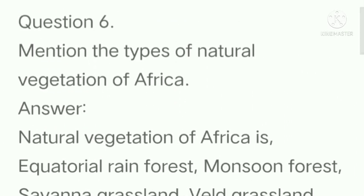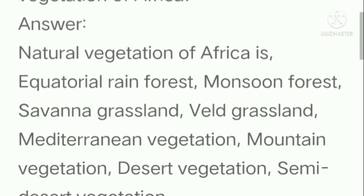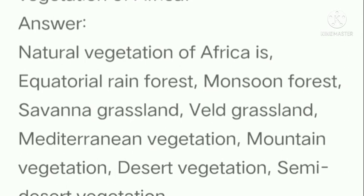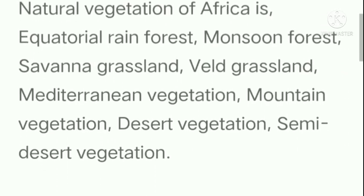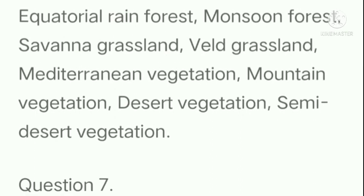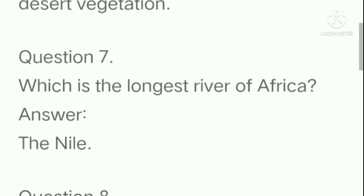Question number 6: mention the types of natural vegetation of Africa. Answer: the natural vegetation of Africa includes equatorial rainforest, monsoon forest, savannah grasslands, veld grasslands, Mediterranean vegetation, mountain vegetation, desert vegetation, and semi-desert vegetation.